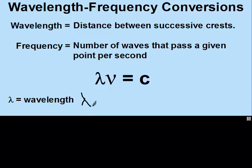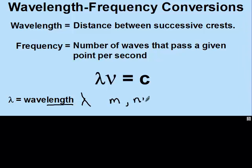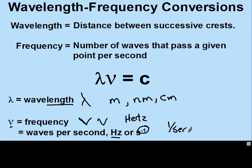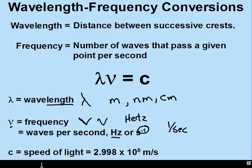Lambda is wavelength, and its units can be meters, nanometers, or centimeters — any form of length. Frequency is the waves per second, written with the symbol nu. Its units are Hz (hertz), or seconds to the negative one, which means one over seconds. C is the speed of light, which is 2.998 times 10 to the 8 meters per second.